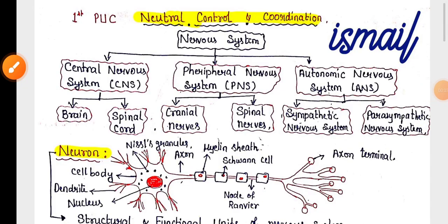Neural Control and Coordination is a chapter in NHPC Biology. This video provides a quick revision of this chapter, which will be very helpful for the coming annual exam.